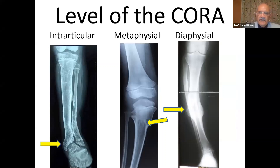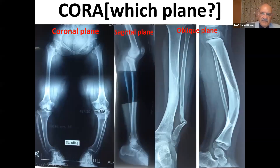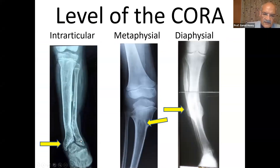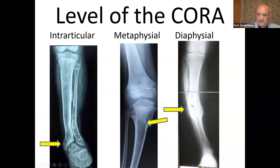What is the level of the CORA or the apex of the deformity? The apex of the deformity can be in the joint — like here, it's inside the ankle itself — or in the metaphysis. This is the obvious CORA; you can see it looks like an apex of the deformity.